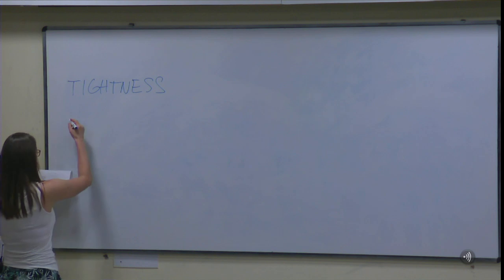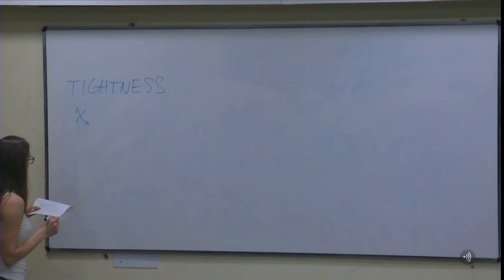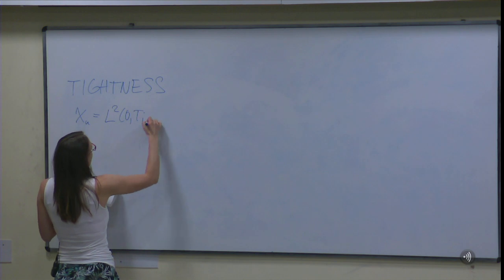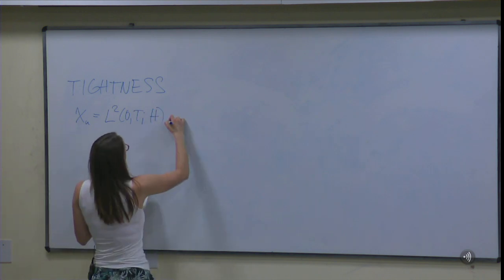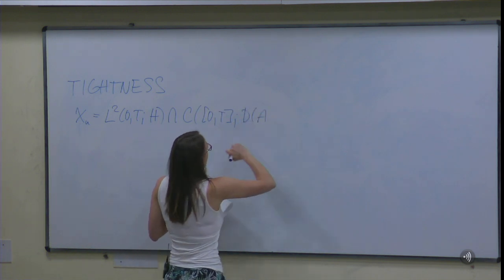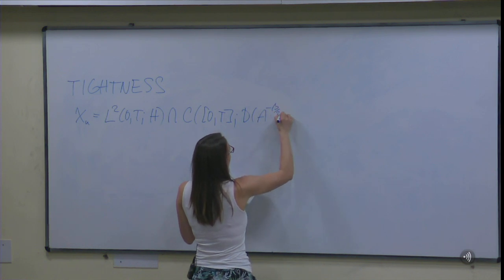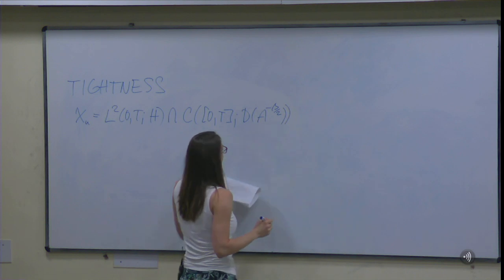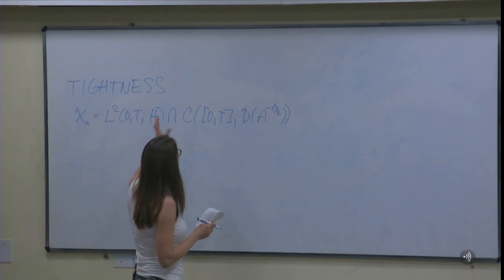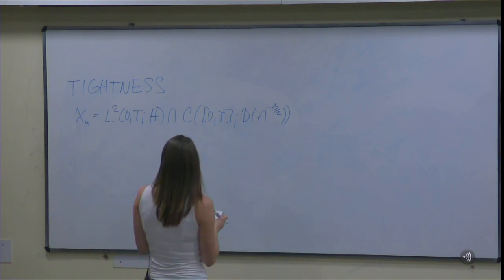I define the following path space for the solutions, which I call X_u. This is the space L² in time with values in H, intersected with continuous trajectories with values in the domain of the Stokes operator to the power minus β/2, where the parameter β is to be determined. We are able to prove tightness for every β strictly positive, as we will see shortly.